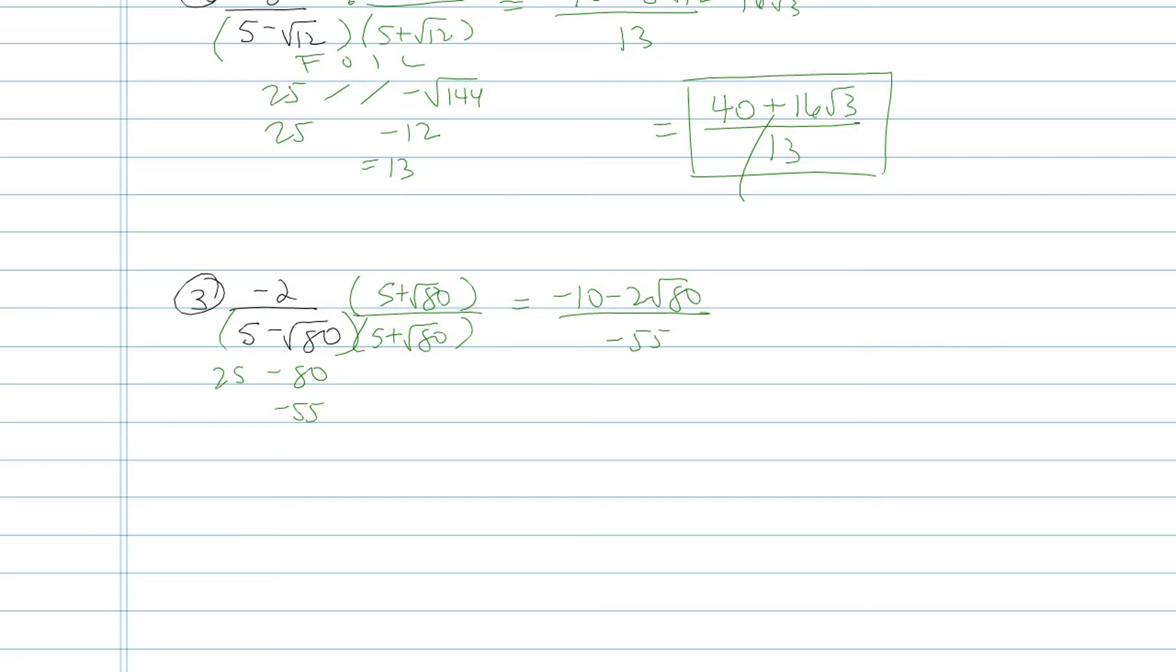Making progress. No more radicals in the bottom. That's a good thing. I still need to simplify this negative two times root eighty bit. So instead of root eighty, I'm going to rewrite that as the product of root sixteen times root five. Because the square root of sixteen is regular old four. So that would be now negative eight root five. Negative ten minus eight root five. That's my numerator. On bottom, I have negative fifty-five.